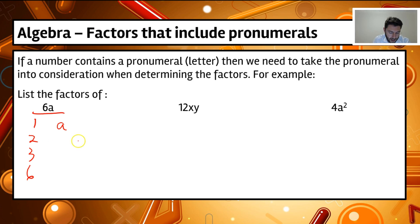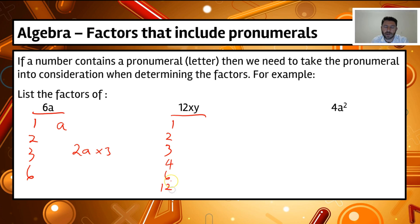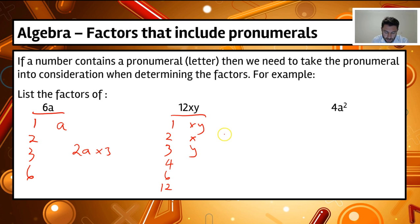For example, for 6a, we might have 2a multiplied by 3. Now let's look at 12xy. The factors of 12 are 1, 2, 3, 4, 6, and 12 — so 1 times 12, 2 times 6, 3 times 4. For the pronumerals x and y, we can have x, y, or xy as factors. So a factor pair might be 2x times 6y, or 3xy times 4. You can see that the pronumeral can actually be part of a factor.